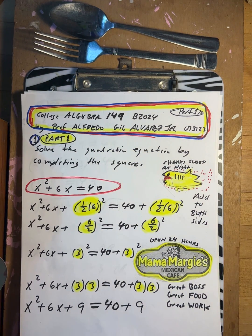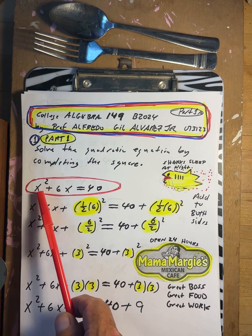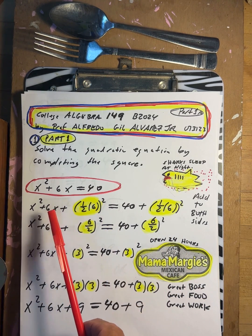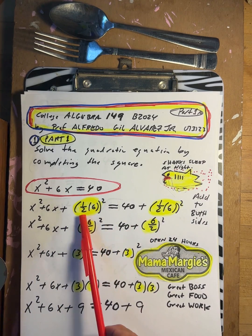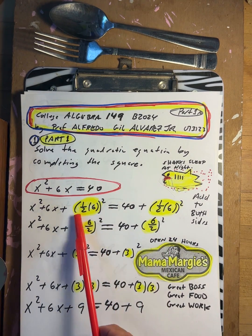So solve the quadratic equation by completing the square. Here's the original problem: x squared plus 6x equals 40. So now x squared plus 6x, one half of 6, this number here, add it to the left, add it to the right.